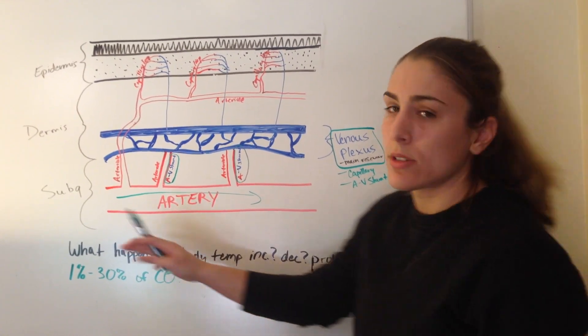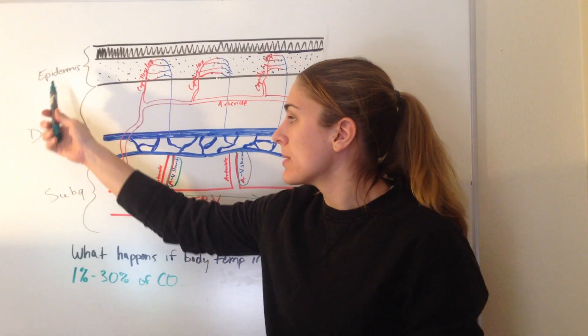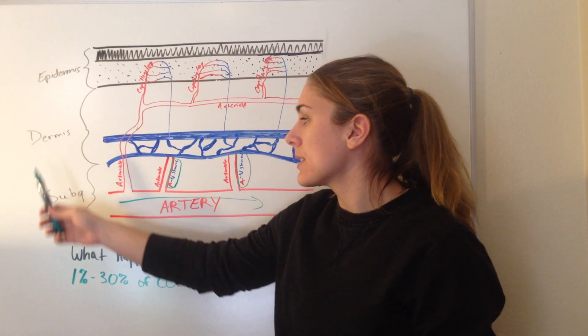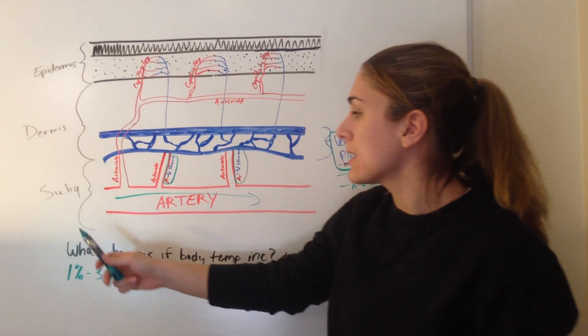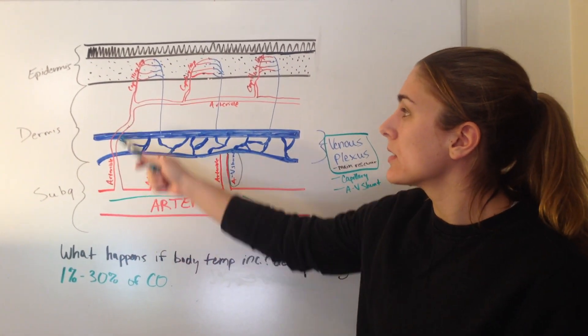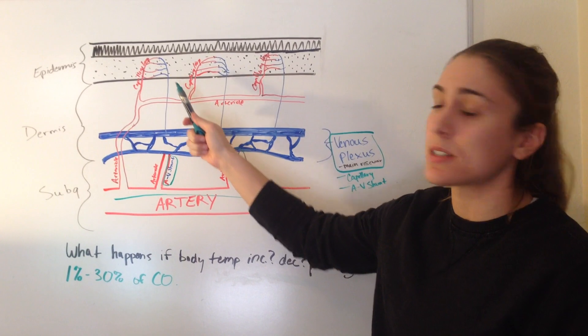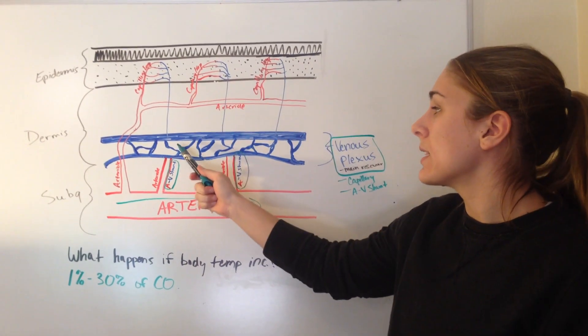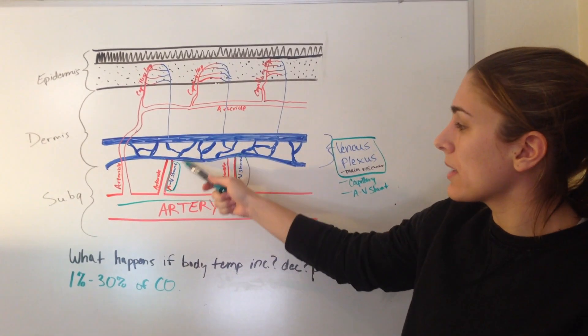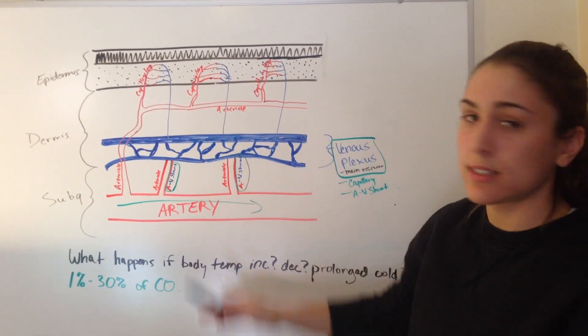Just to get yourself oriented, we have the epidermis here, the dermis, and the subcutaneous. Here we have arteries that go into arterioles and capillaries, and we have the venous side of the capillaries, which go to the venous plexus, and then here we have the AV shunts.